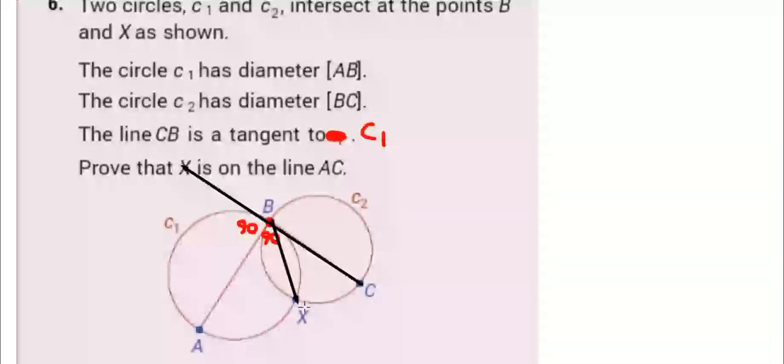Any point above that diameter that you connect to those endpoints is an angle in a semicircle. So using circle C1 with diameter AB, that automatically means this has to be 90 degrees.